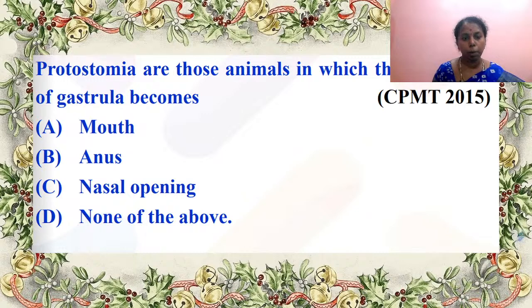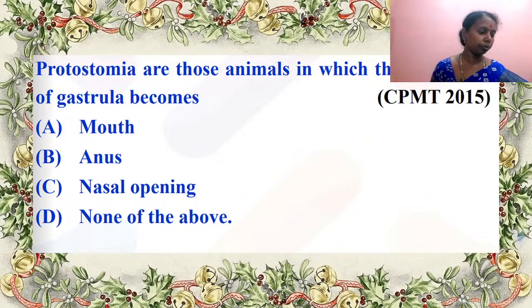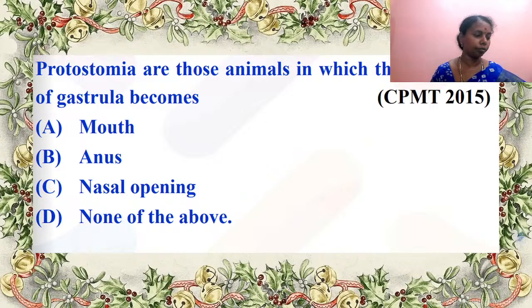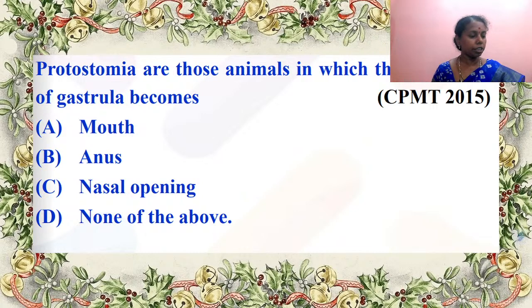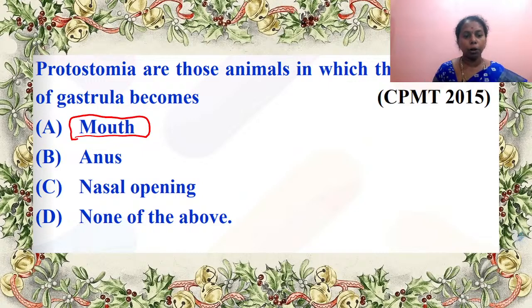Protostomia are those animals in which the blastopore of the gastrula becomes what? In protostomia, the blastopore becomes the mouth. In case of deuterostomia, the anus forms first followed by mouth.